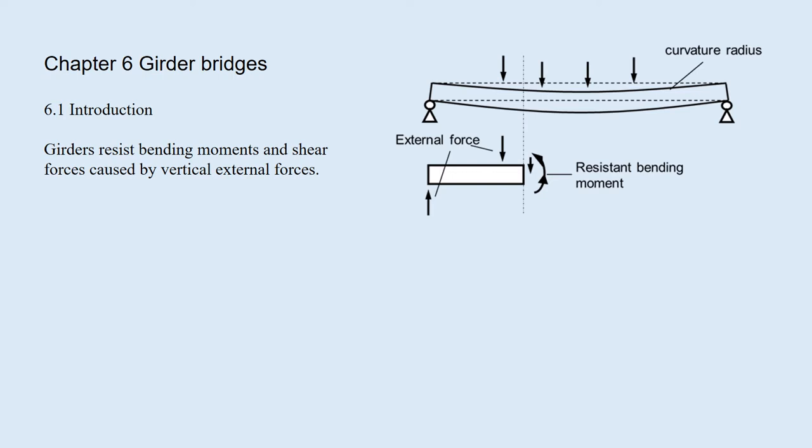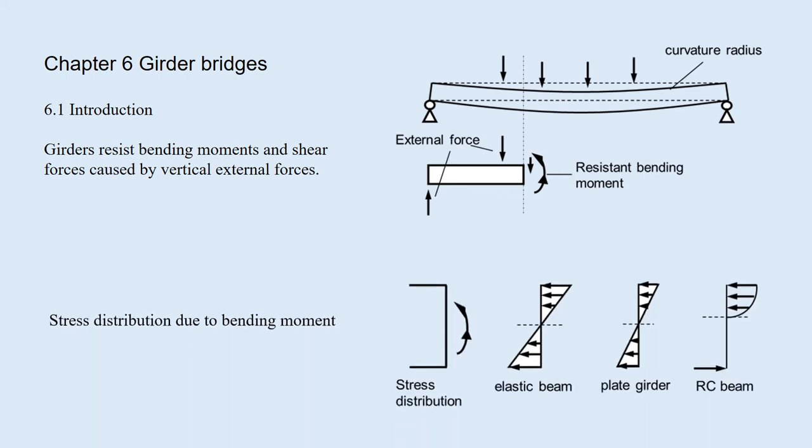In the girder bridge, the girders resist bending moments and shear forces caused by the design loads. When subjected to vertical loads, the sectional forces — bending moment and shear force — occur at an arbitrary section. When an elastic beam is subjected to bending moments, stresses occur in a section and they are proportional to the distance from the neutral axis. The plate girder shows the same stress distribution. As for the RCB, the concrete only resists compression and the steel reinforcement resists tension, so the stress distribution of concrete is non-linear.